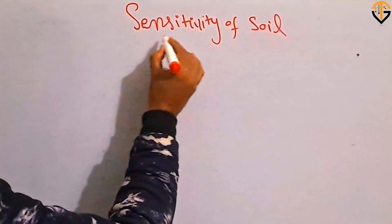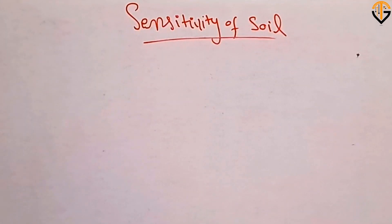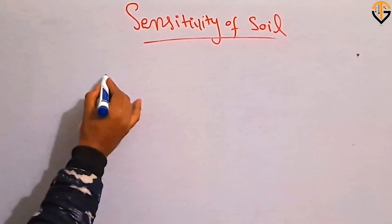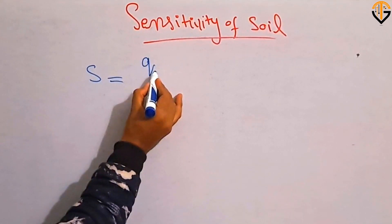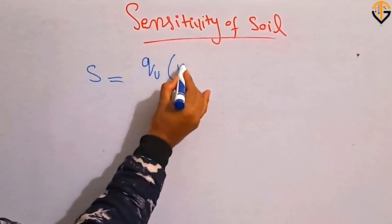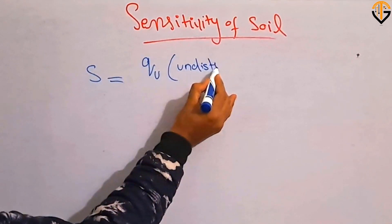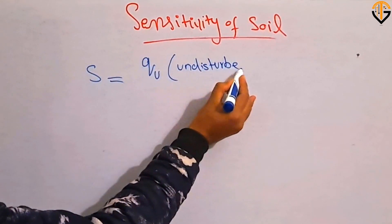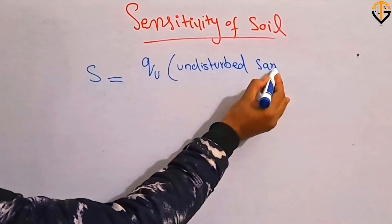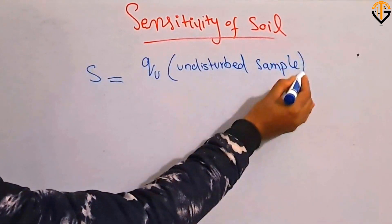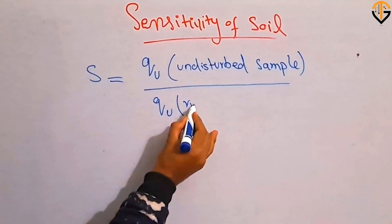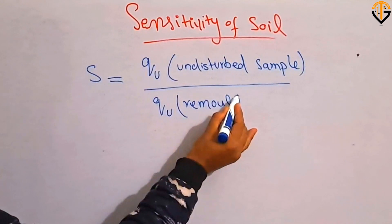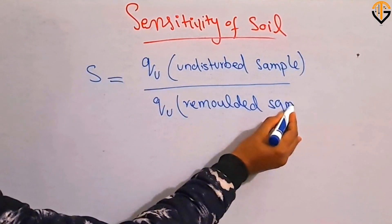Sensitivity of soil. The sensitivity of the soil is the ratio of unconfined compressive strength of the soil at undisturbed sample to the unconfined compressive strength at remolded sample or disturbed sample.